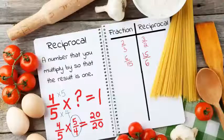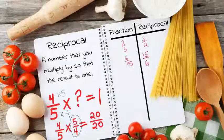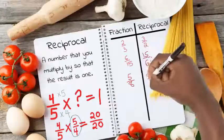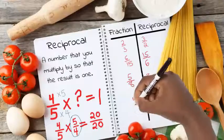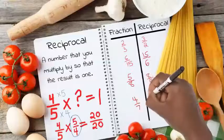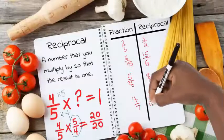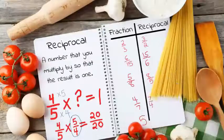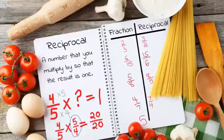Did you guess 15 sixths? Because that's right! Are you noticing what I'm noticing? Every time we find the reciprocal, the fraction gets flipped around — the numerator becomes the denominator, and the denominator becomes the numerator. That means the reciprocal of 5 eighths is 8 fifths, the reciprocal of 4 sevenths is 7 fourths, and the reciprocal of 5 — since that's just 5 over 1 — the reciprocal must be 1 over 5.